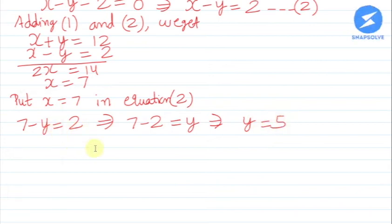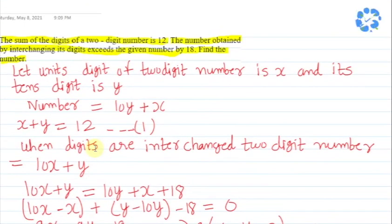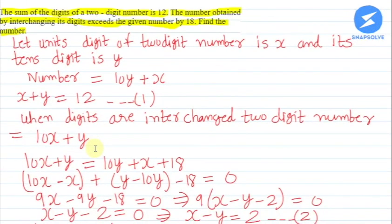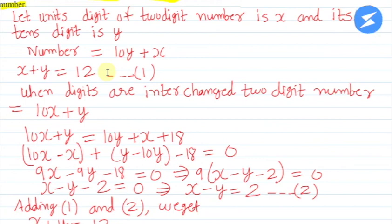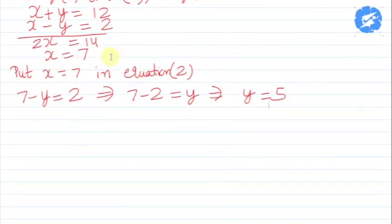We have x equals 7 and y equals 5. The two-digit number was 10y plus x, which equals 10 times 5 plus 7, equals 50 plus 7, equals 57.